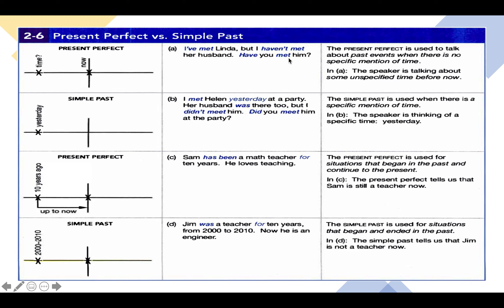The exact time of the action is not mentioned and not known, so we use the present perfect simple. But if we have the exact time mentioned — like 'yesterday,' for instance — as in this example: 'I met Alan yesterday at a party. Her husband was there too, but I didn't meet him.'